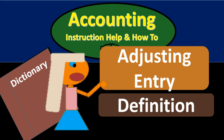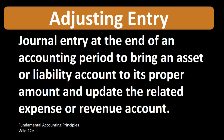In this lecture we're going to define the term adjusting entry. According to Fundamental Accounting Principles, 22nd edition, the definition of an adjusting entry is: a journal entry at the end of an accounting period to bring an asset or liability account to its proper amount and update the related expense and revenue account.